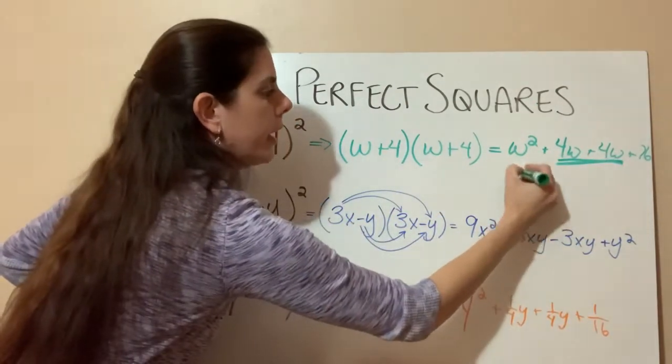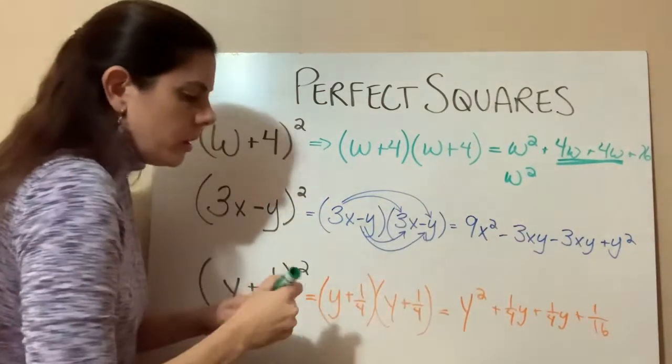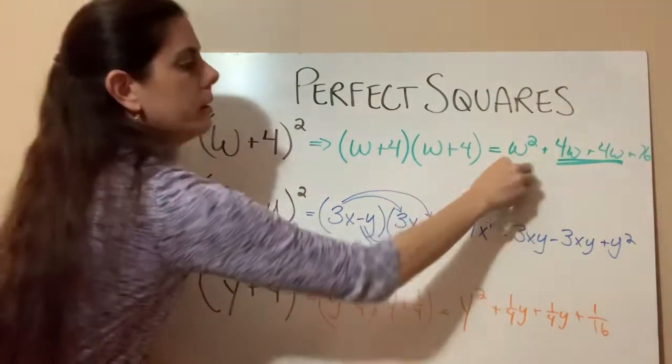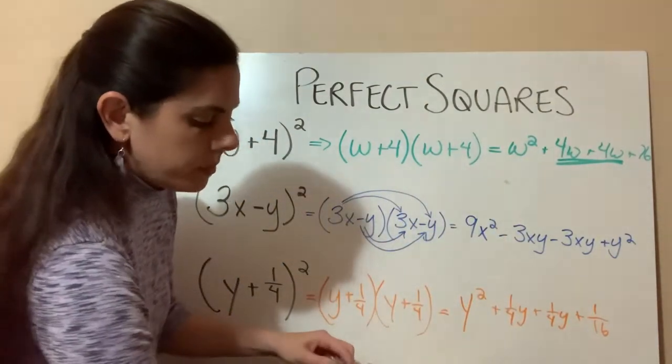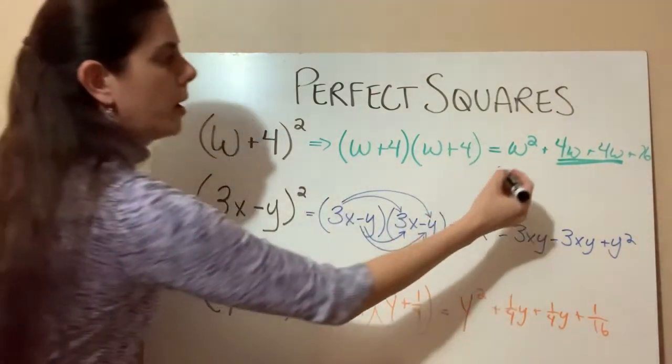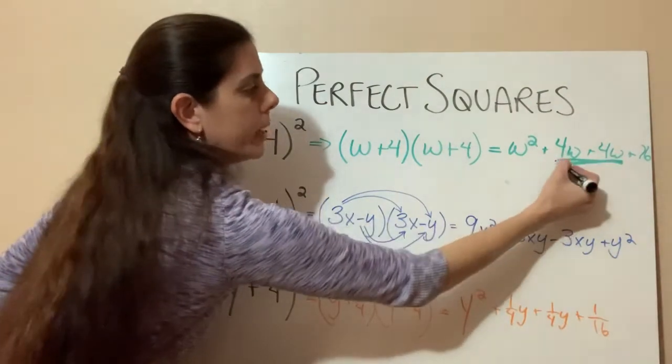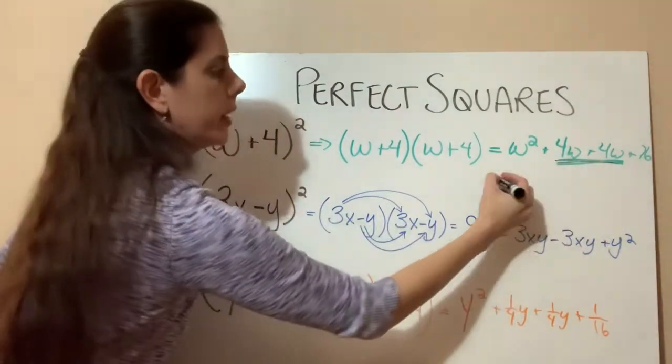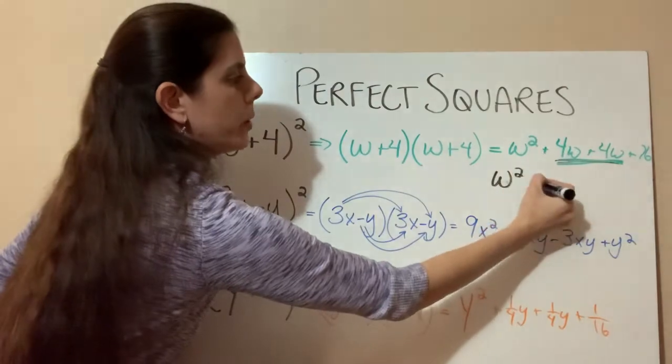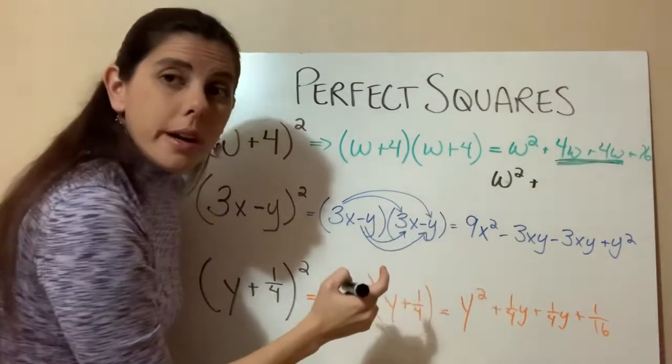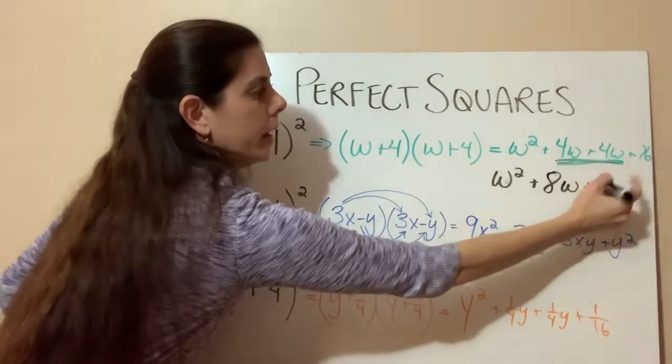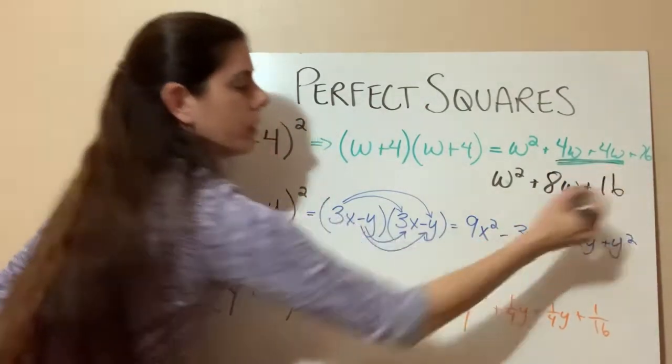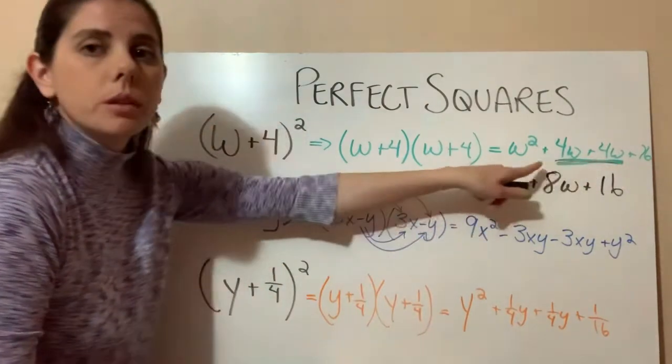Now remember what I said about these middle terms. What's going to happen with all these middle terms? So that's our goal in these special products. So when we combine these middle terms here, we'll end up with w squared plus four plus four is eight. So we have 8w, and then plus 16. So we just combine those middle two terms.